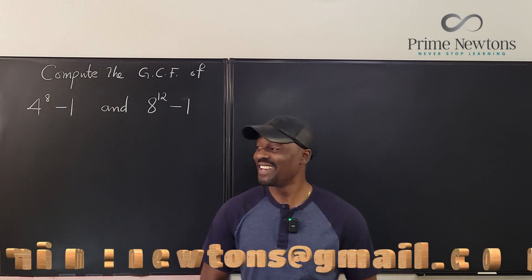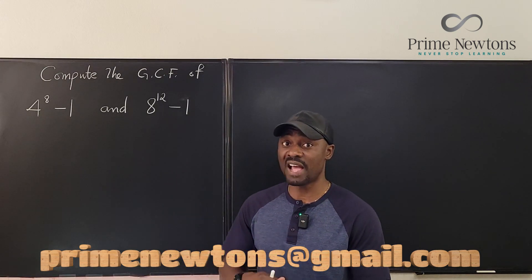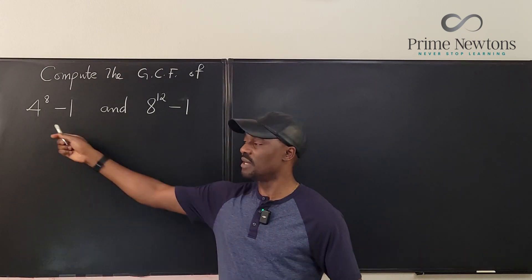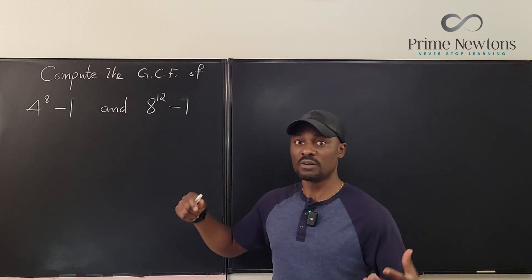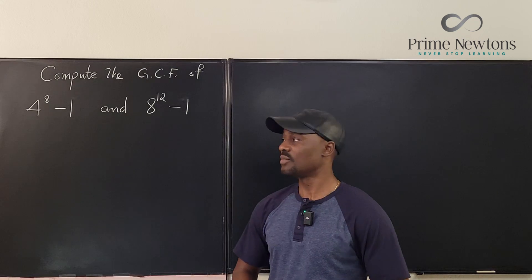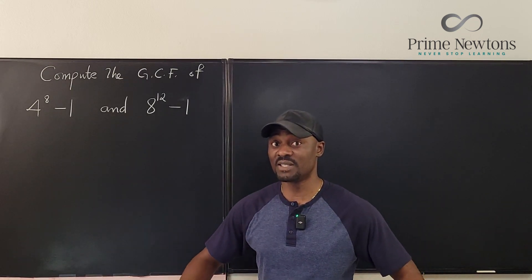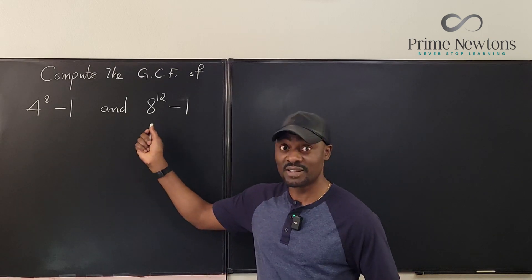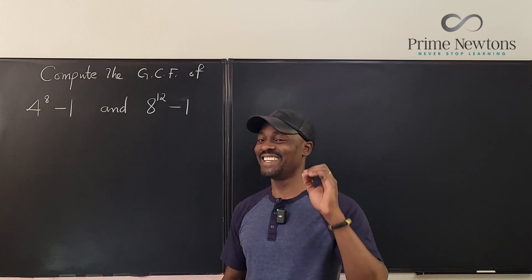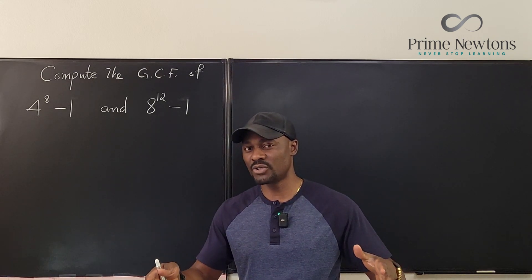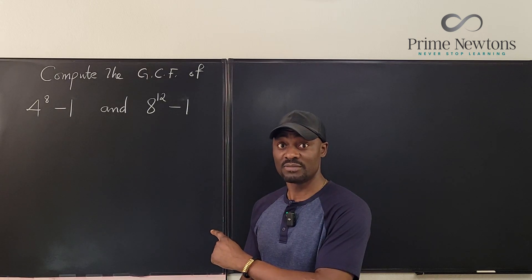Welcome to another video. This one requires that we find the greatest common factor of two big numbers written in this form: 4 to the 8th minus 1 and 8 to the 12th minus 1. You're not expected to multiply out these numbers because this is a competition question from the Harvard-MIT Math Tournament, algebra section of 2014, and the answer to this problem is 15.